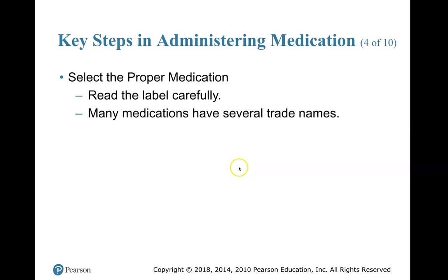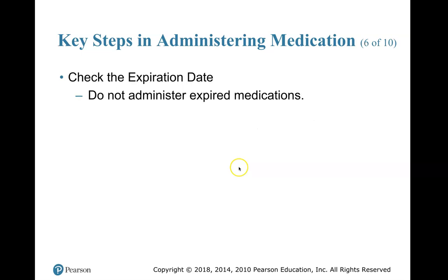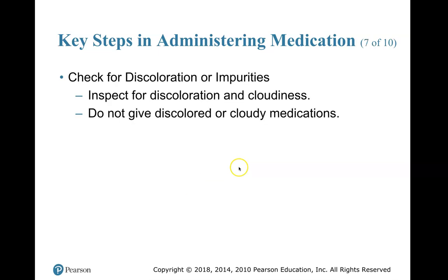Select the proper medication — read the label carefully, as many medications have several trade names. Verify the patient's prescription: when assisting with the patient's medication, verify that the medication to be given is prescribed to them. Check the expiration date — do not administer expired medications. Check for discoloration or impurities — inspect for discoloration and cloudiness, and do not give discolored or cloudy medications.